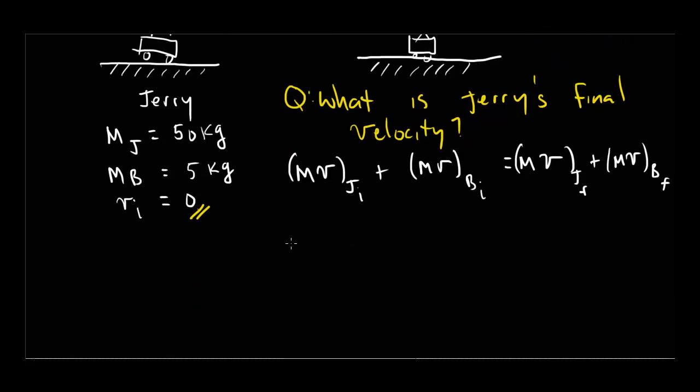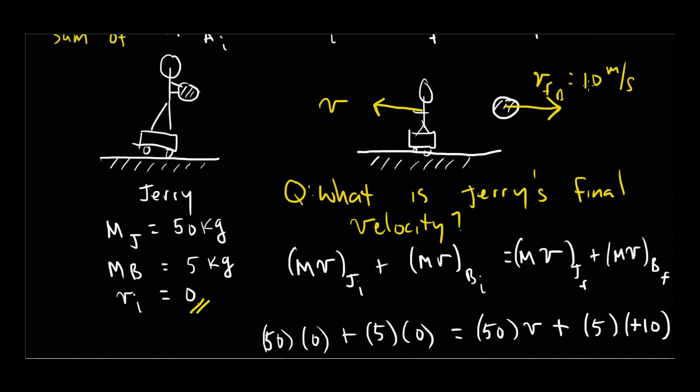We have the mass of the ball is five, or mass of Jerry is 50. So we say 50 times zero plus the mass of the ball is five times zero equals, so we can already see that's going to be zero, the mass of Jerry, 50, times his velocity, V. That's what we don't know. That's what we're looking for, plus the momentum of the ball, five times the ball's velocity, which is 10. And I'm choosing to call this, again, positive 10.